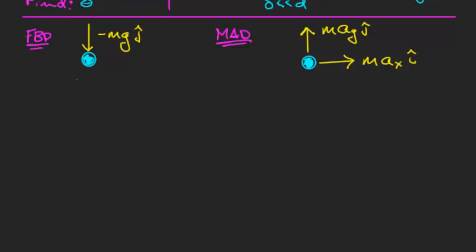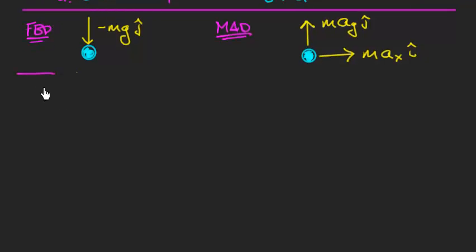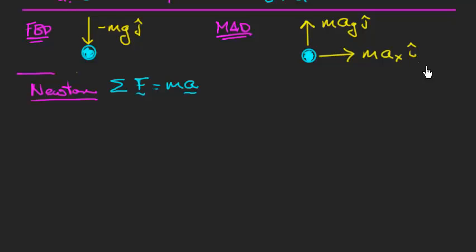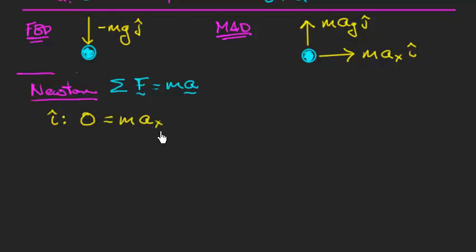The physical principle we're using is Newton's second law: the sum of forces equals mass times total acceleration. This is a vector equation, so we split it into scalar component equations. In the i-hat direction, there are no forces, so the left-hand side is zero, giving 0 = m·ax. Since mass is never zero, the horizontal component of acceleration ax must be zero.